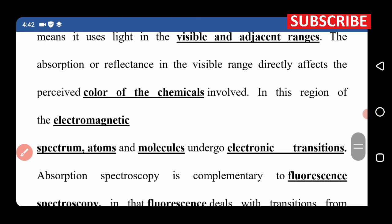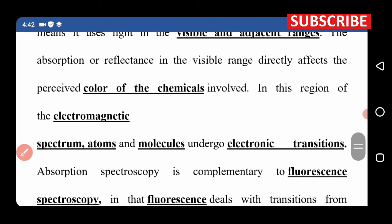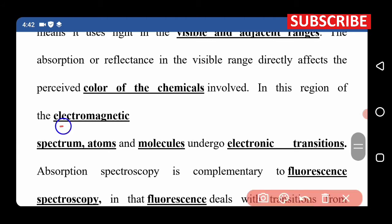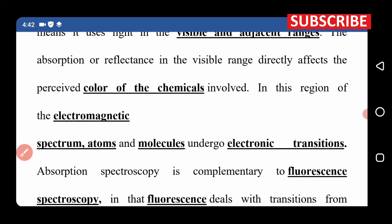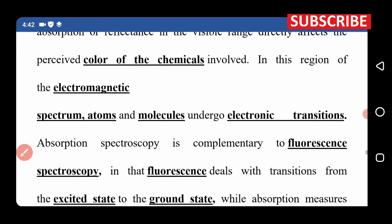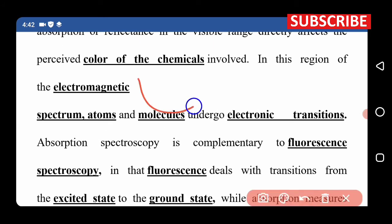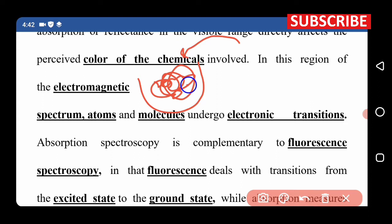Light is used as electromagnetic radiation — it is electromagnetic radiation that forms the electromagnetic spectrum. Atoms and molecules undergo electronic transitions. The electromagnetic spectrum encompasses the range of these transitions.